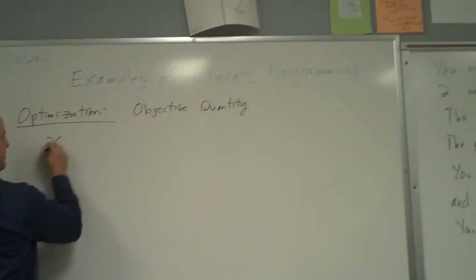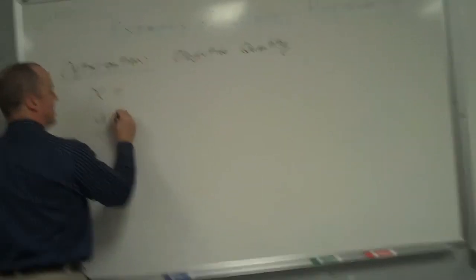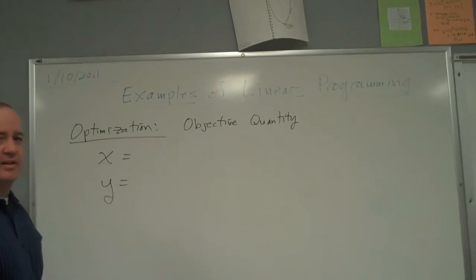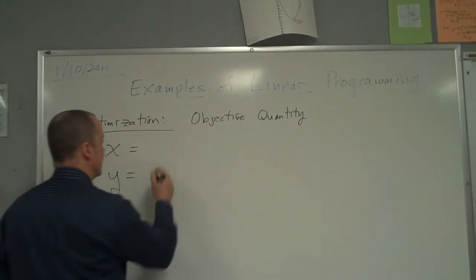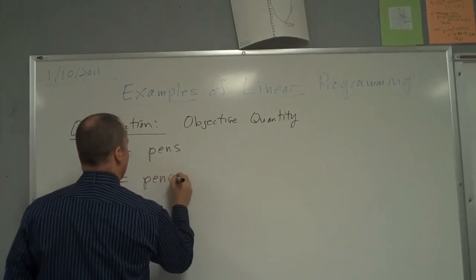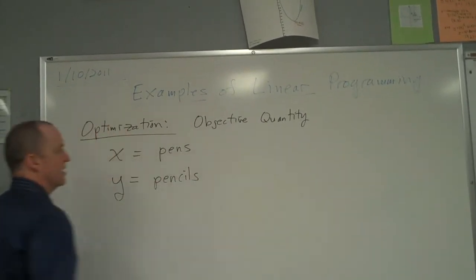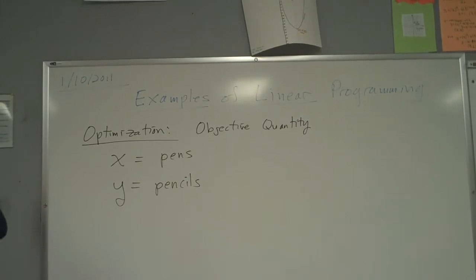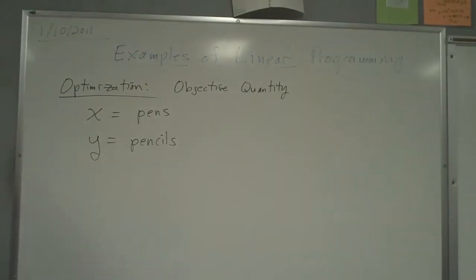Now, usual thing. Let's identify an X and a Y. What do you think X and Y are going to be? Pens and pencils. Somebody's been doing these word problems a long time. I'm going to say X is pens. I'm going to say Y is pencils. And now the objective quantity is the equation of what you want to optimize.